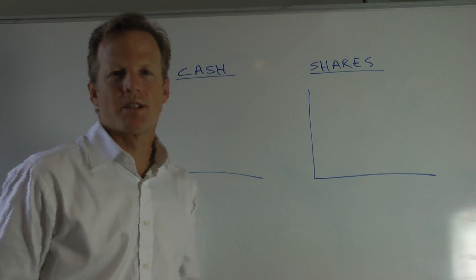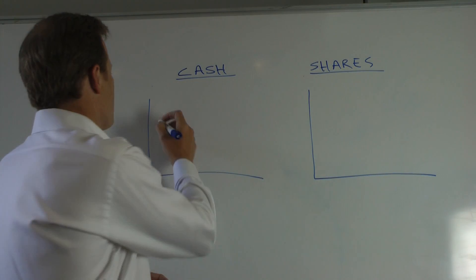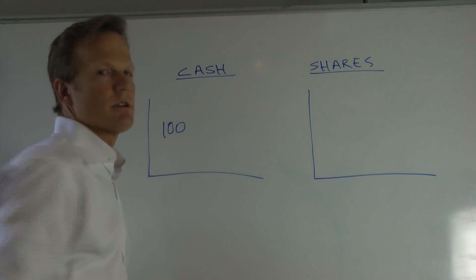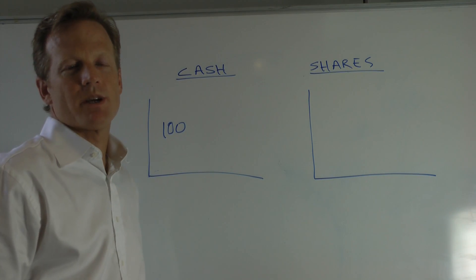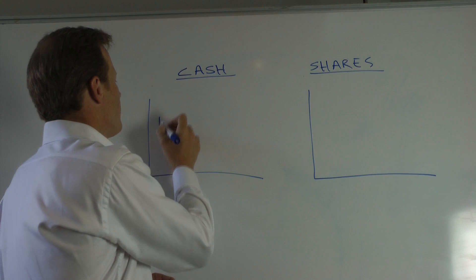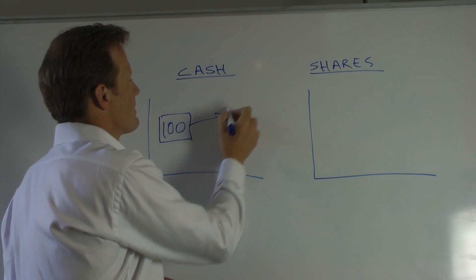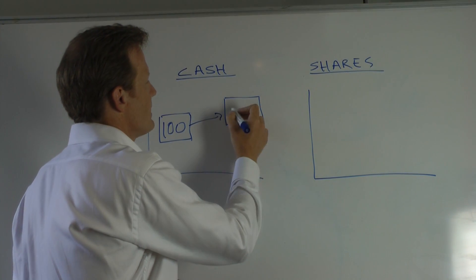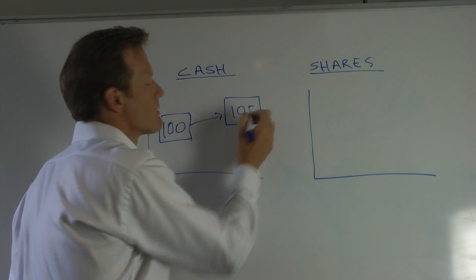We'll start with a couple of observations on risk. When we invest in cash we have a pretty good idea of what the outcome is going to be. If interest rates are say 5% per annum then we know with a high level of confidence that over the course of a year we can expect $100 in cash to turn into $105.